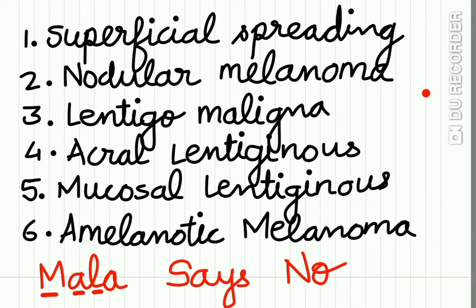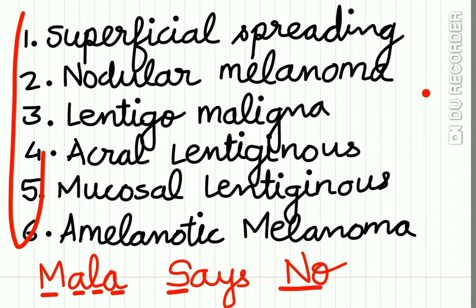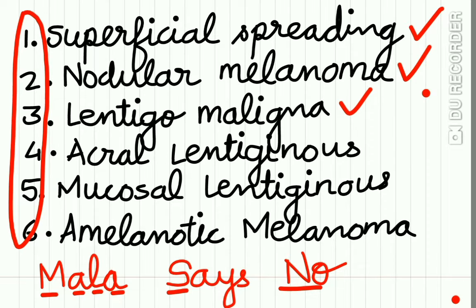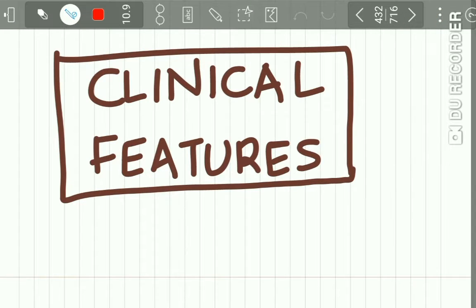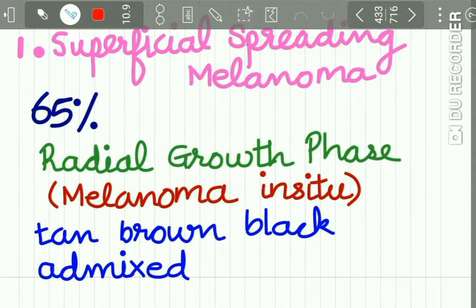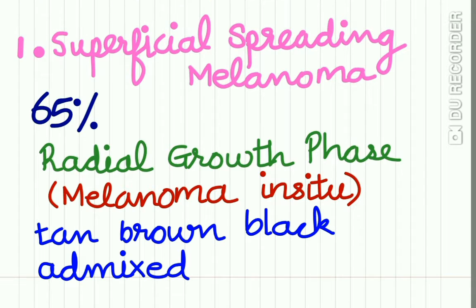An easy mnemonic to remember is MALA SAYS NO. The six types of malignant melanoma are: superficial spreading, nodular, lentigo malignant, acral lentiginous, mucosal lentiginous, and amelanotic melanoma.